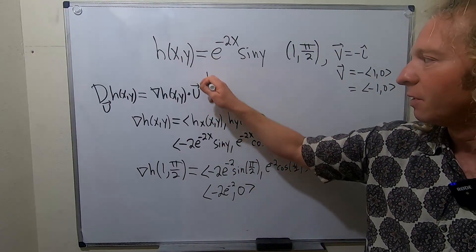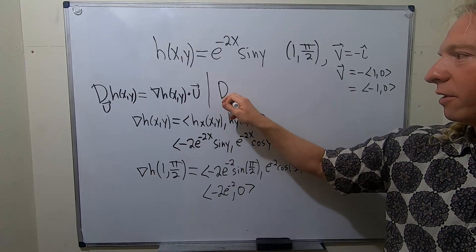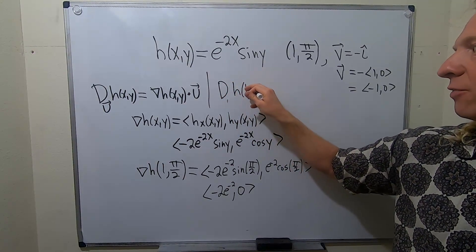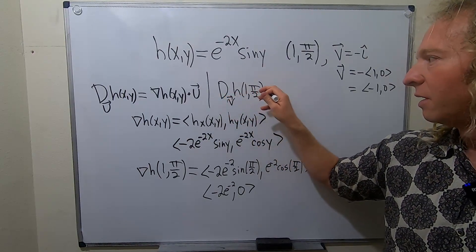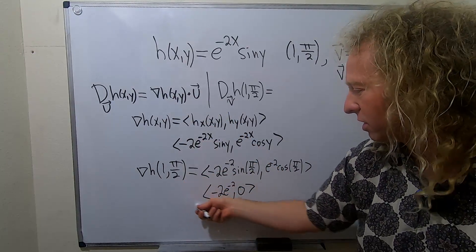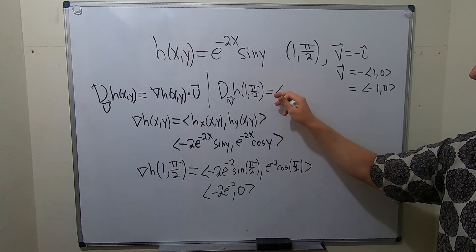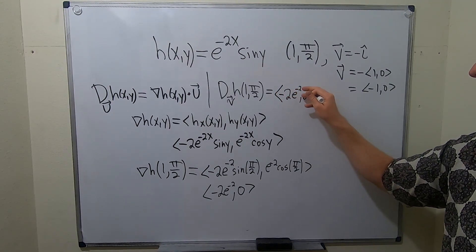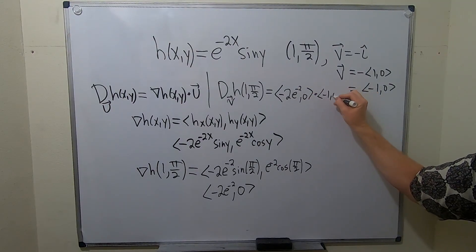So to finish this problem, all we have to do is plug in the numbers into the formula. So the directional derivative of our function at 1 pi over 2, right, the notation is important, and the direction of our unit vector v is given by the dot product of this and this. So this is going to be angle bracket negative 2 e to the negative 2, comma 0, dotted with this. So negative 1, comma 0.